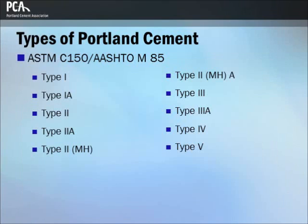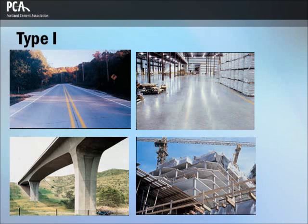Portland cements are manufactured to meet the specifications of ASTM C150 or AASHTO M85. The requirements of these two standards are equivalent and provide for 10 types of Portland cement. Type 1 Portland cement is a general purpose cement suitable for all uses where the special properties of other cement types are not required. Its uses in concrete include pavements, floors, bridges, and roads.